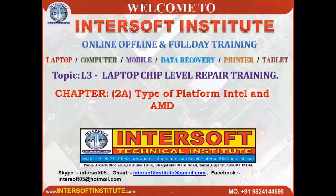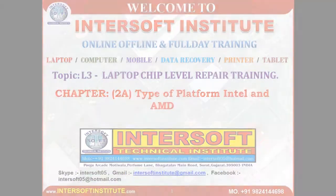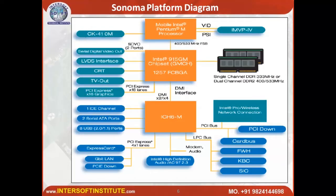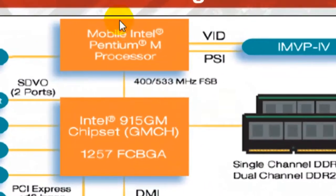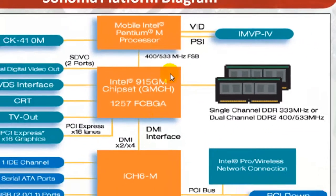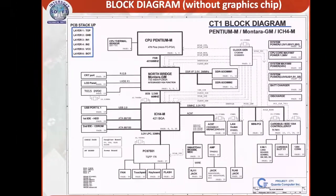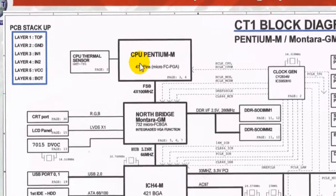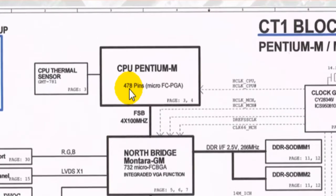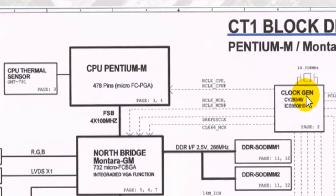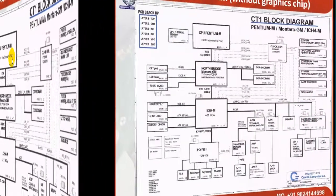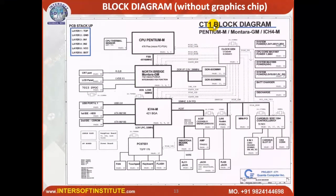Chapter 2: types of platforms — Intel and AMD. The platform block diagram shows the CPU, north bridge, and south bridge. The CPU is connected with the north bridge, and the north bridge is connected with the RAM, input/output, and PCI Express graphics. The CPU has 478 pins and requires a clock frequency, so a clock generator IC provides the frequency to the CPU. This is the CT1, which is the DV2000 motherboard.